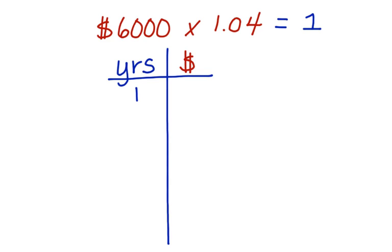So in year one, the first year, we multiply $6,000 times 1.04. And we get a total of $6,240.